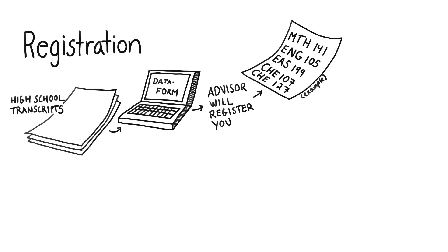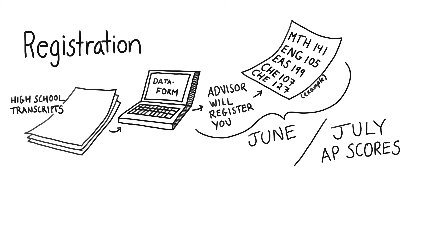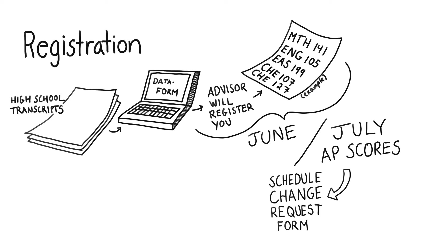You can view your schedule in the Hub Student Center. As far as a timeline, let's say we register you in June, but you've taken AB Calculus and won't receive your score until July. That class is equivalent to Calculus 1. If you get your score in July and receive a 4 or 5 and wish to be placed into Calculus 2, you can update us via an online form called the Schedule Change Request Form.